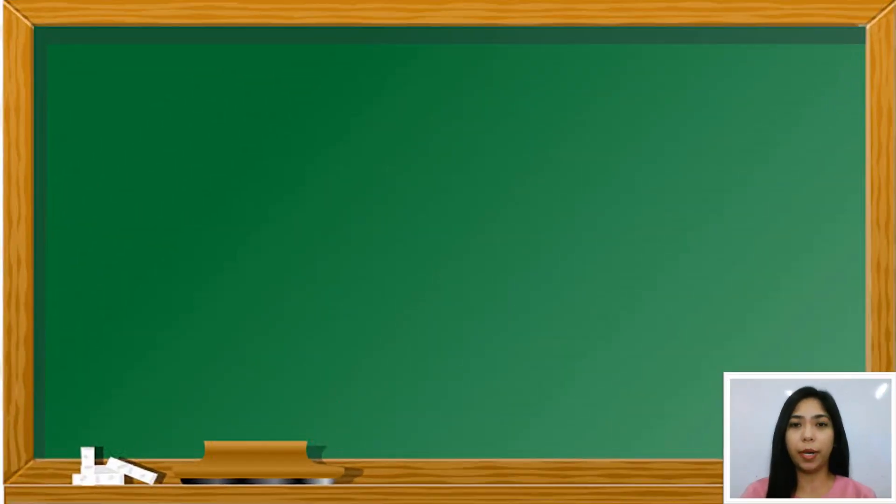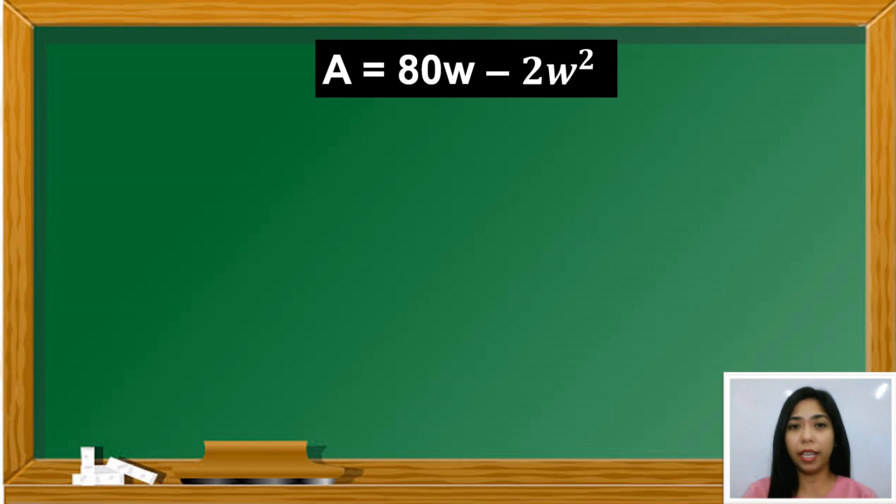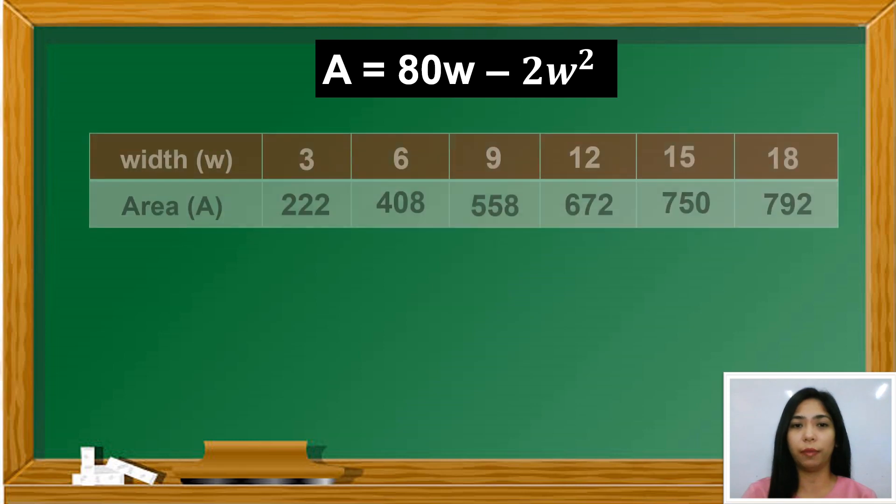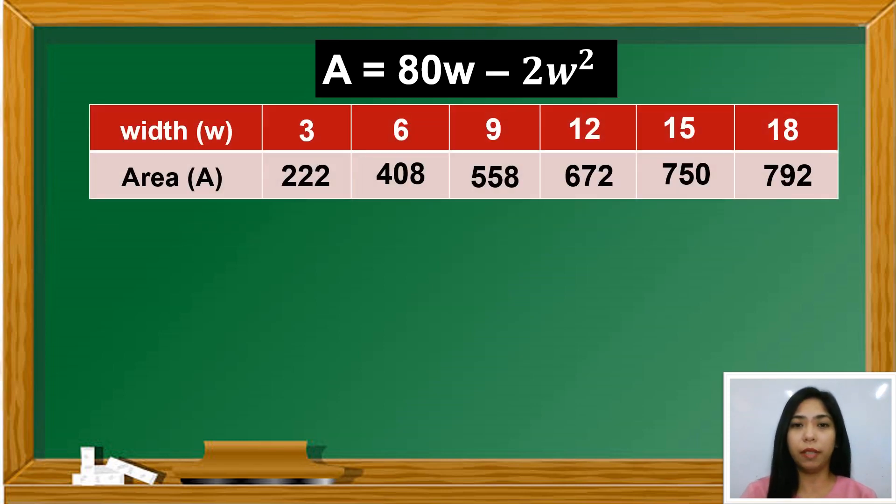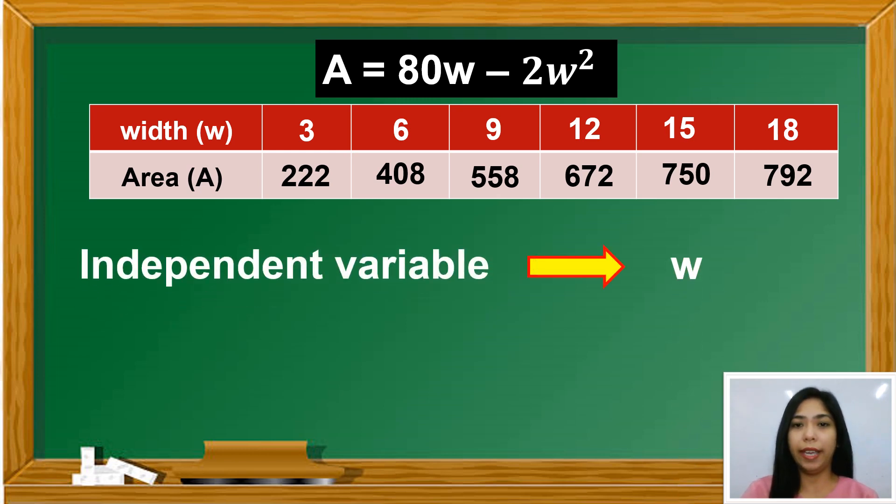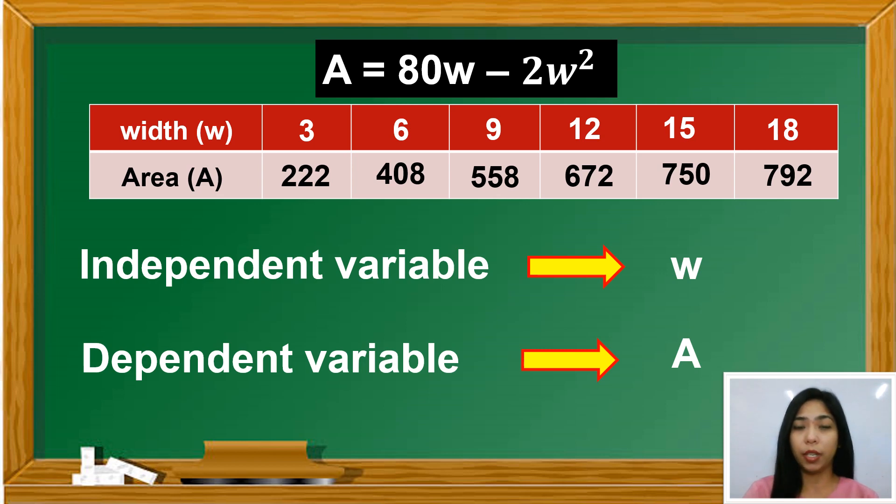So now, based on the given problem, the area of the parking lot depends on the measures of its length and width. And the equation A equals 80W minus 2W squared is an example of a quadratic function. So we have two variables involved here, the width and the area. Again, width here is the independent variable, and the area is the dependent variable. Independent variable is a variable often denoted by X whose variation does not depend on that of another. While dependent variable is a variable often denoted by Y whose value depends on that of another.